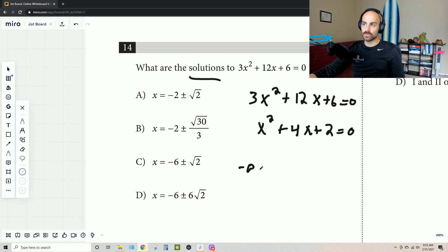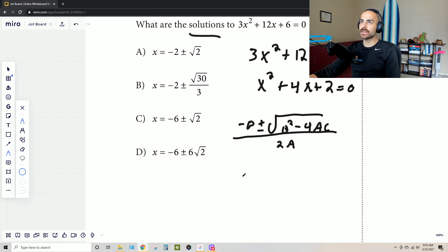Now that I have simpler values to work with here, I can plug it into the quadratic formula, which is negative b plus or minus the square root of b² - 4ac all over 2a. And now I can just plug these in, and it's going to be a lot easier to solve for.